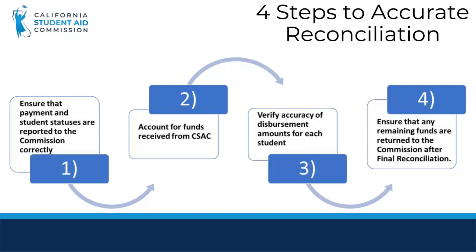There are four steps to accurate reconciliation. The first step is to ensure that payment and student statuses are reported to the Commission correctly. The second step is to account for funds received from CSAC. The third is to verify accuracy of disbursement amounts for each student. And the fourth step is to ensure that any remaining funds are returned to the Commission after final reconciliation. We will go over each step individually and explain what it means.